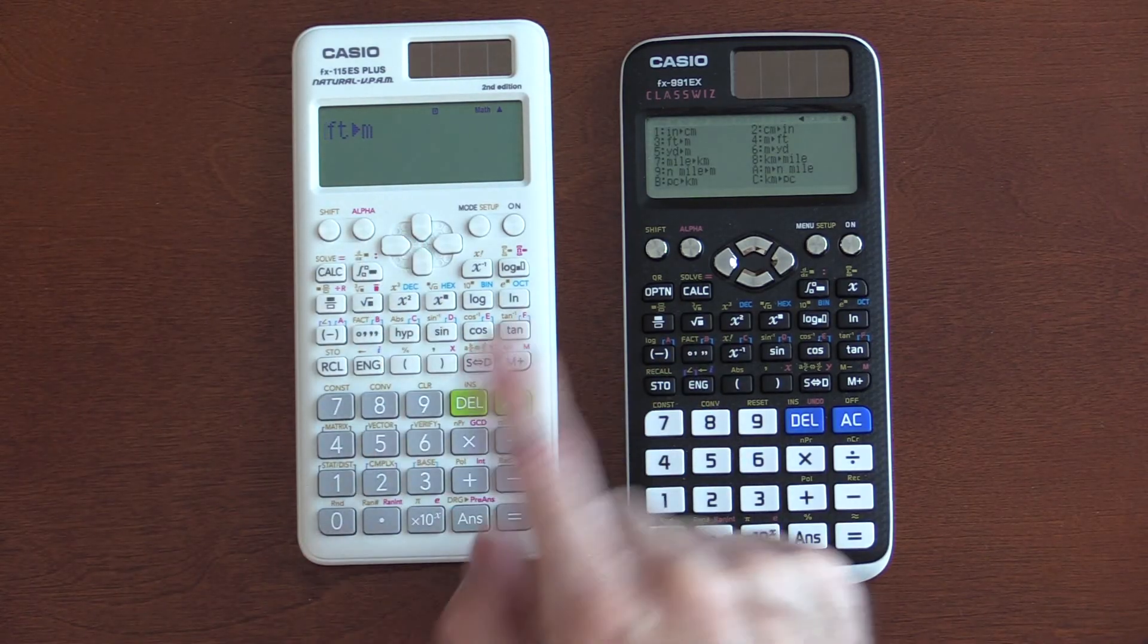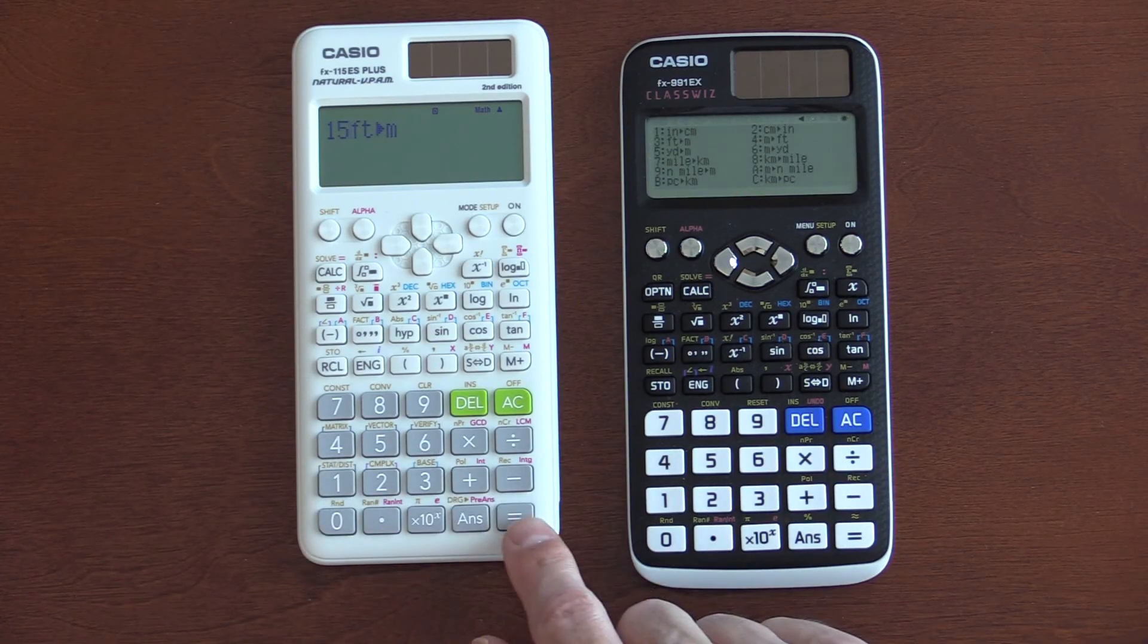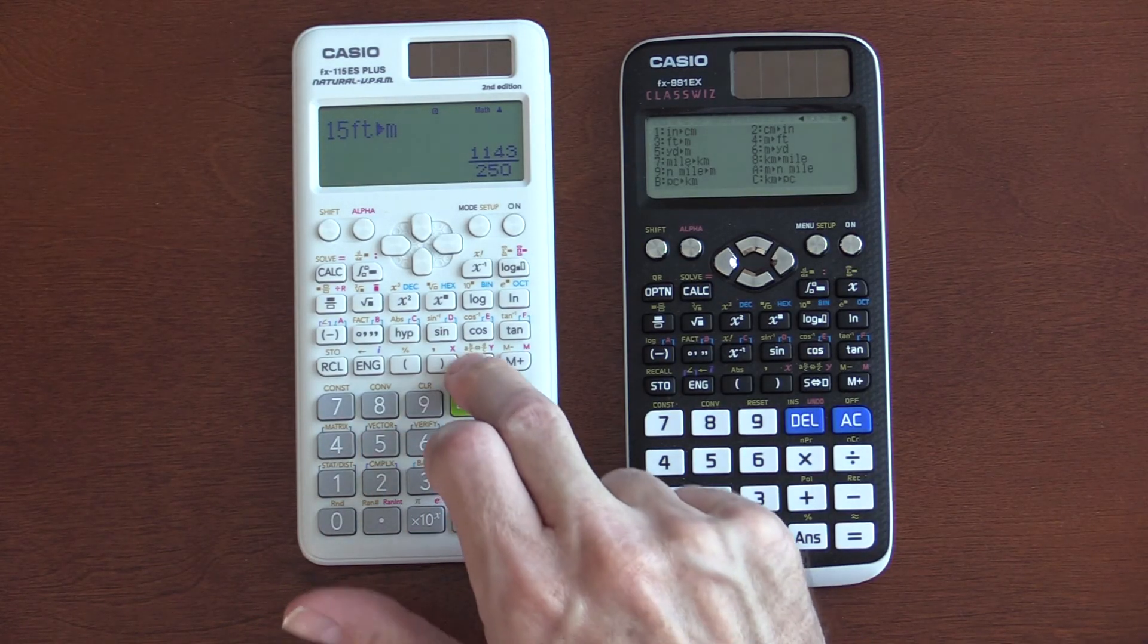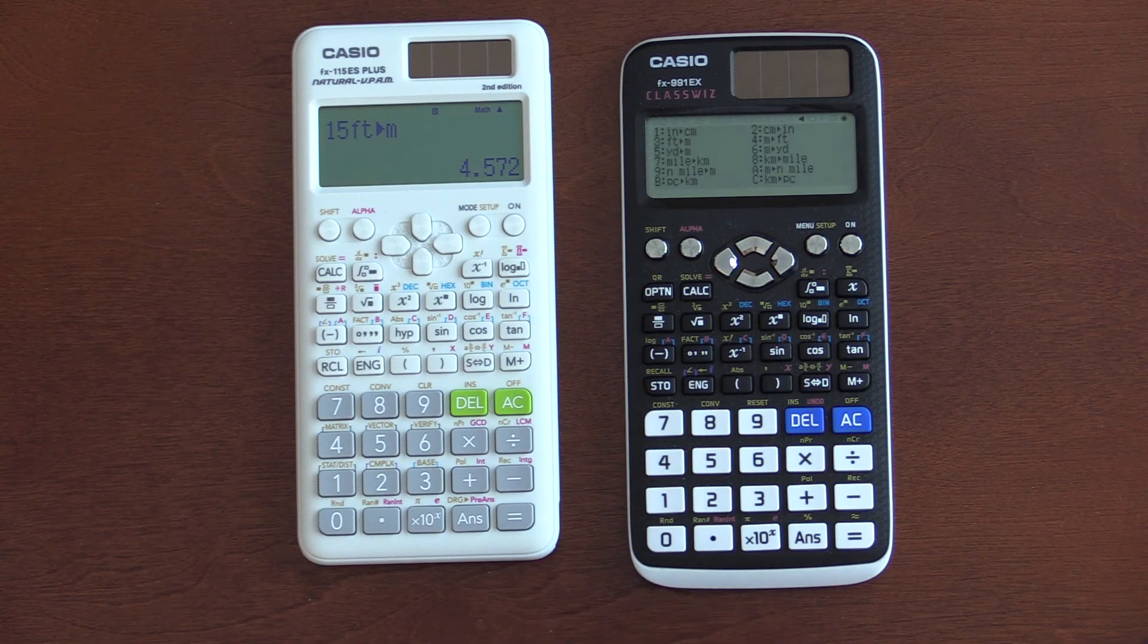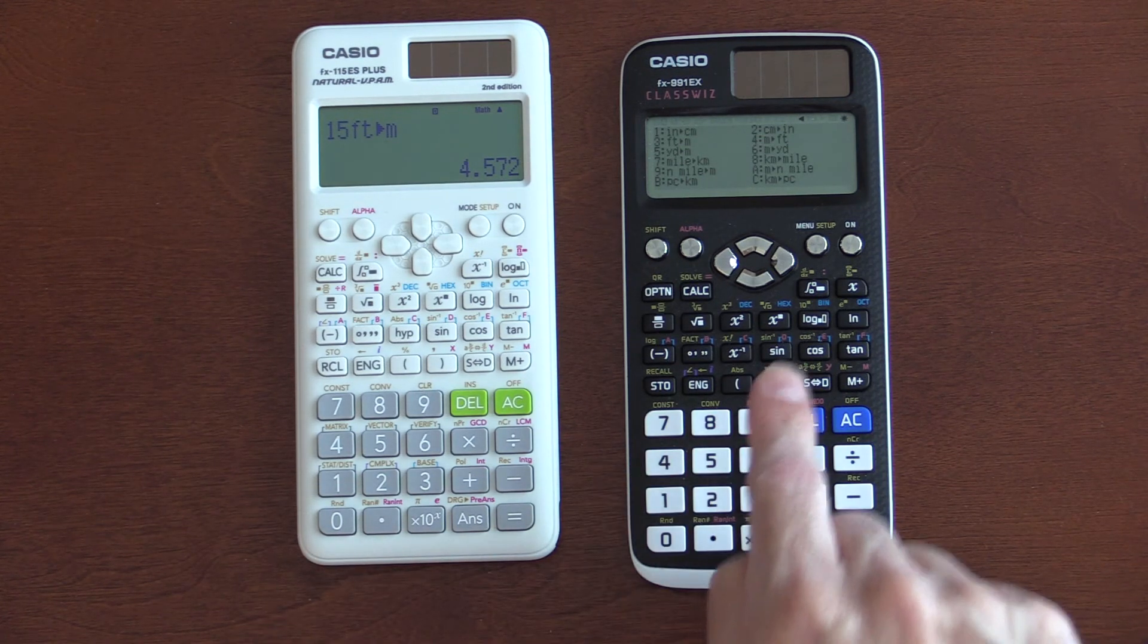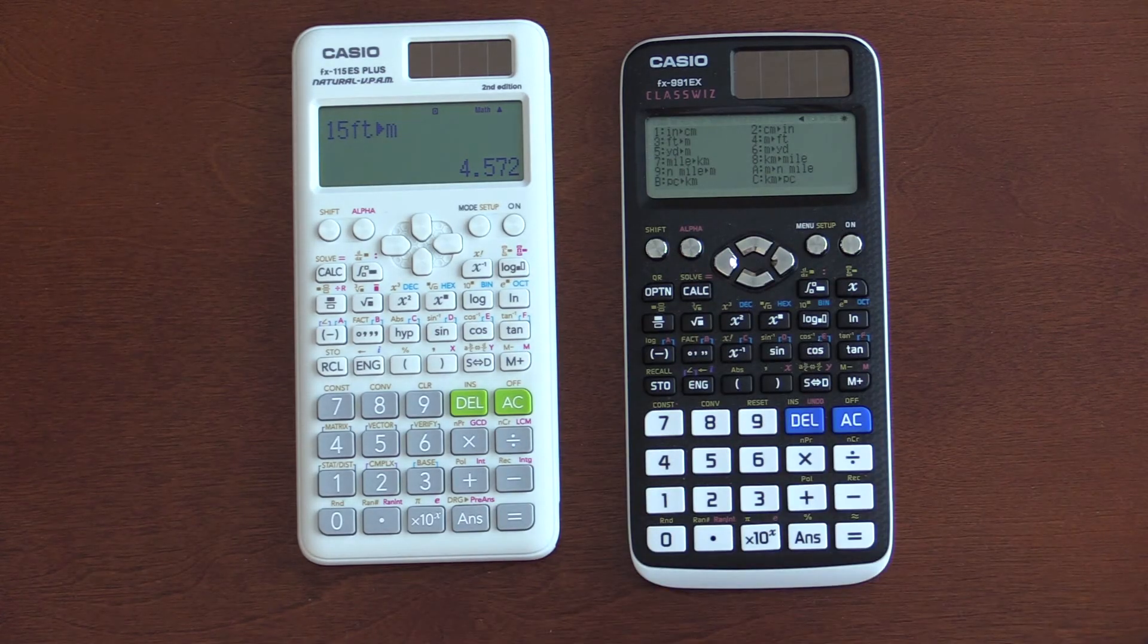And, then you would type in, well, how many feet? You hit the back arrow. Type in how many feet? Let's say 15 feet. And, it gives you the number of meters. That's fine, but that's pretty inferior, or that is inferior to the EX, where it's this built-in menu system.